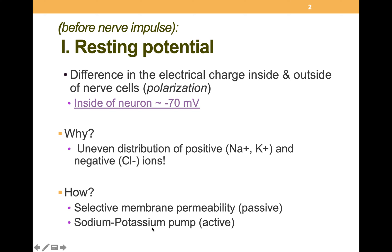There's another mechanism, which is an active one, and that's the sodium-potassium pump. The sodium-potassium pump is a protein complex that pumps out three sodium ions for every two potassium in. By doing this, it maintains this resting equilibrium — or really disequilibrium. There's about a million of these pumps in a single neuron.